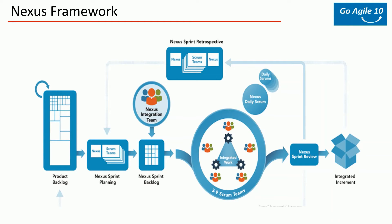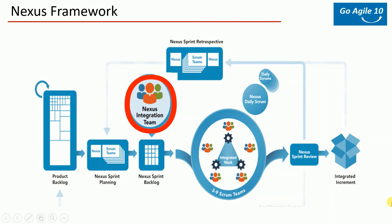All teams, regardless of location, must integrate at least once daily into the code base. In addition to the daily scrum for each team, there is also a daily Nexus Scrum meeting, similar to your Scrum of Scrums. There is also a Nexus Sprint Retrospective and Nexus Review after each sprint. Nexus is designed to handle projects with up to 100 people, and Nexus Plus handles over 100 people, potentially into the thousands. You need to be really well organized to run Nexus because daily integration is the key.